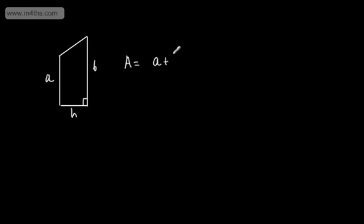Let's look at a trapezium. Lower down in school, you might have met a trapezium — it has two parallel sides, which we call A and B, a perpendicular height, and a slant height. The area of a trapezium is given as A plus B divided by 2, multiplied by the perpendicular height. So if A was 10, B was 6, and the height was 5, we get 10 plus 6 divided by 2, multiplied by 5.